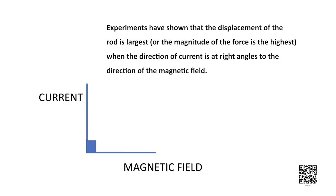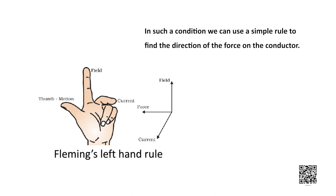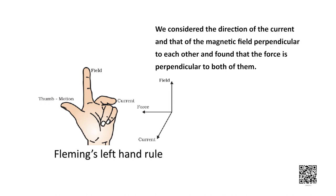Changing the direction of the field to vertically downwards by interchanging the two poles of the magnet also reverses the direction of force acting on the current carrying rod. This shows that the direction of force on the conductor depends on both the direction of current and the direction of magnetic field. Experiments have shown that displacement of the rod is largest when the direction of current is at right angles to the direction of the magnetic field.